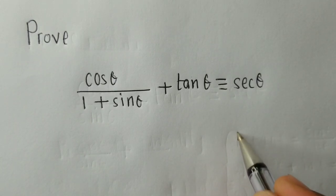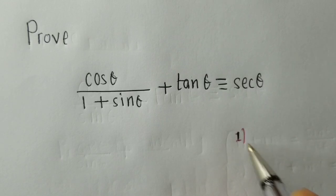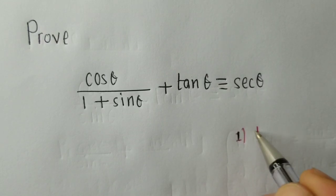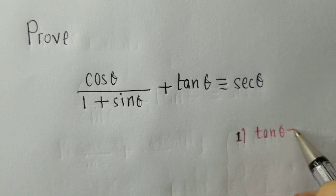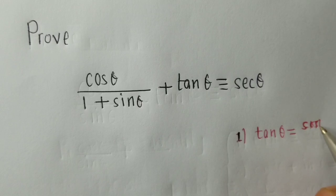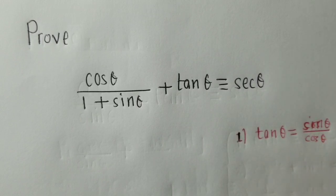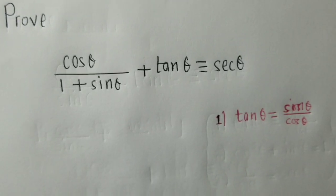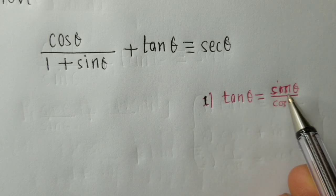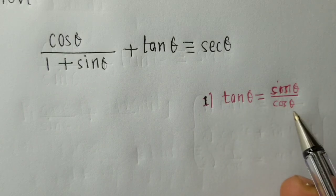Identity 1, we need to know that tan theta is equal to sin theta over cos theta. This is very important. You must know that tan theta equals sin theta over cos theta.